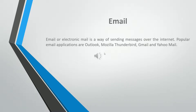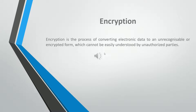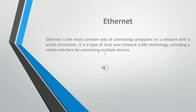Email or electronic mail is a way of sending messages over the internet. Popular email applications are Outlook, Mozilla Thunderbird, Gmail, and Yahoo Mail. An email address is a string of letters, numbers and symbols that identifies a person or organization on the internet. Encryption is the process of converting electronic data to an unrecognizable or encrypted form, which cannot be easily understood by unauthorized parties. Ethernet is the most common way of connecting computers on a network with a wired connection. It is a type of local area network (LAN) technology, providing a simple interface for connecting multiple devices.